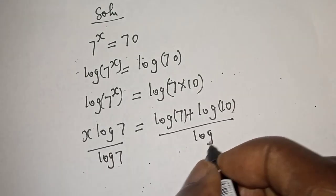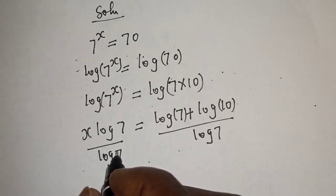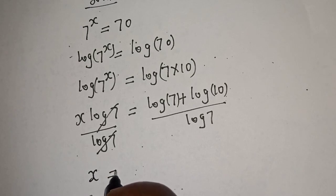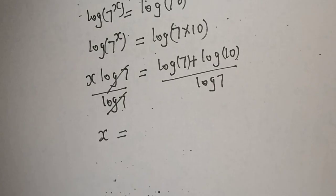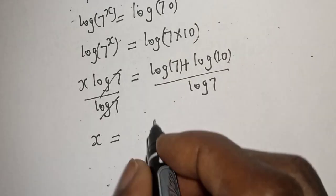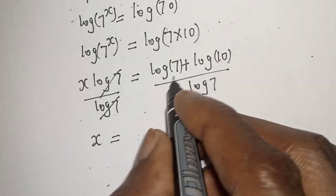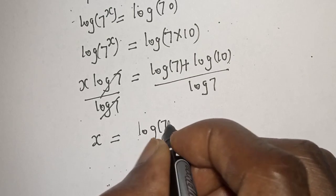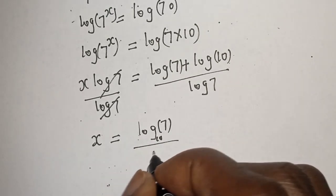Divided by log seven, this will cancel. x is equal to... Note that everything is in base 10. We have log seven base 10 over log seven base 10.